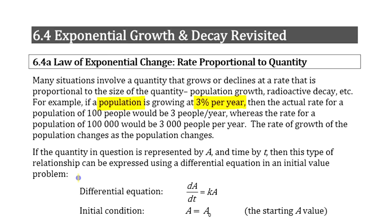Something to realize about that is that when you say 3% per year, it depends on the size of the population, the actual rate that you're growing at. So if you have 100 people, you're growing at 3%, 3 people per year. Whereas if you have 100,000, well, 3% represents 3,000 people a year. So another way to look at this would be to say the rate of growth is proportional to how big the population is.